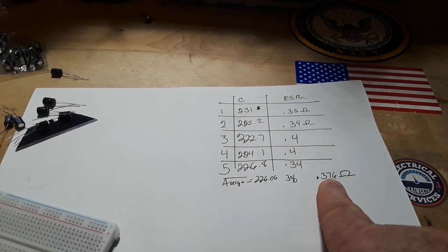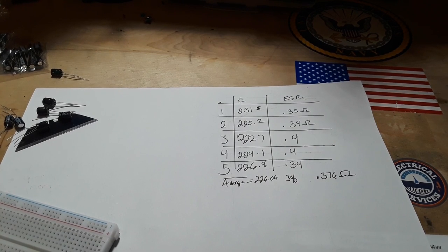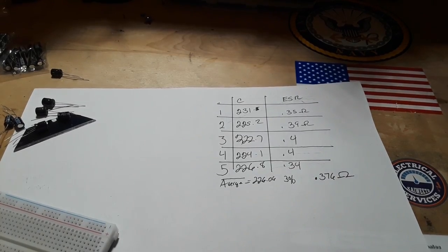Once again, I did the math. We've got 0.376 ohms. Not bad. Not bad at all. Now, if we have a look at an ESR table, 220 microfarads at 10 volts should be 0.9 or less. Let's cut that in half so it should be 0.4 or less. It's in there.